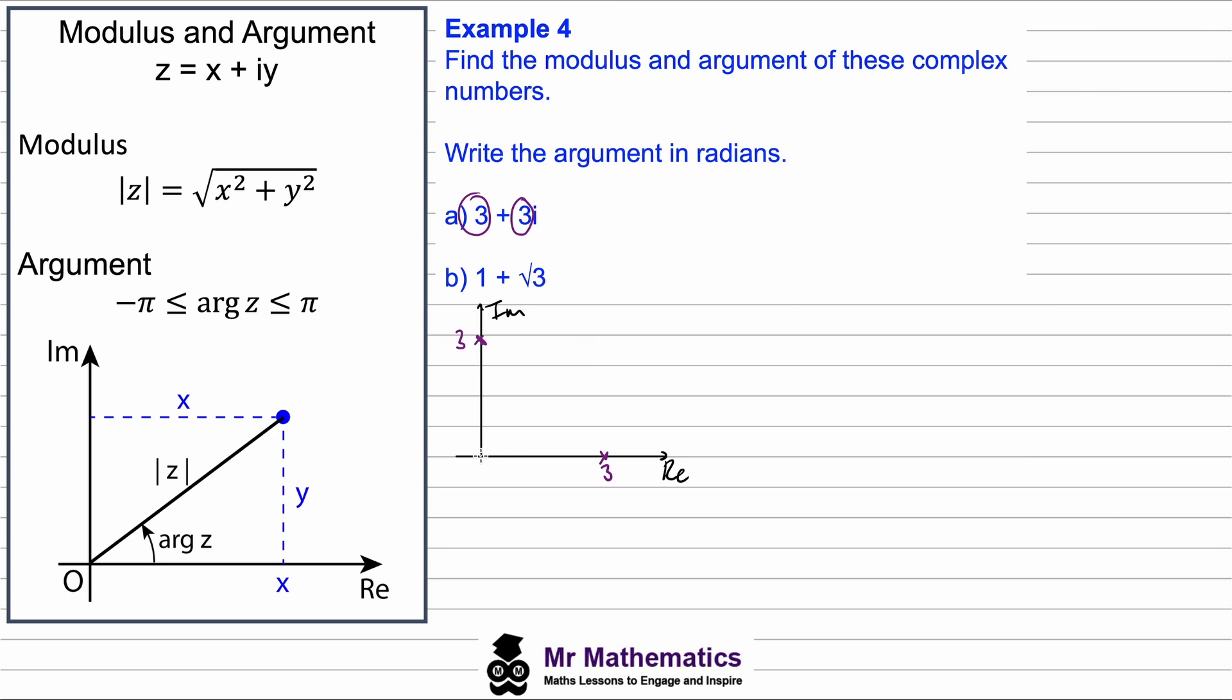So on our Argand diagram it will have coordinates (3, 3), where 3 is the real part and this 3 is the imaginary part with 3i.